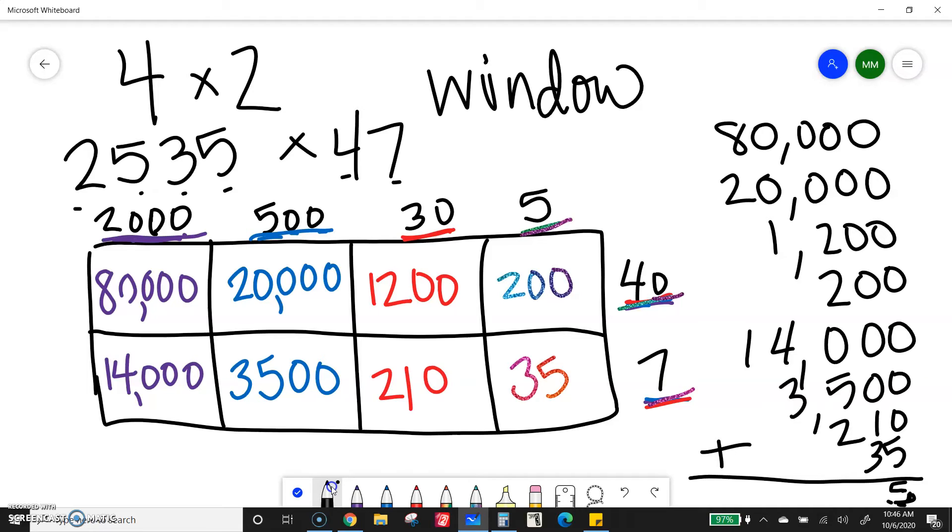So when I get 0, 0, 0, 0, 0, 0, 1 plus 3 is 4. 0, 0, 2 plus 2 is 4. Plus 5 is 9. 10, 11. Write that, carry the 1.